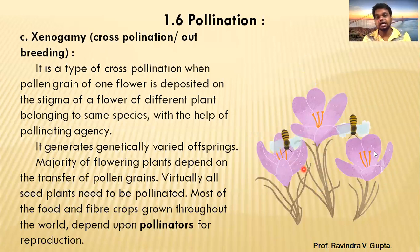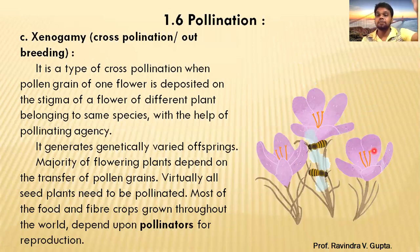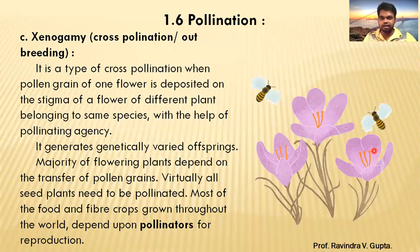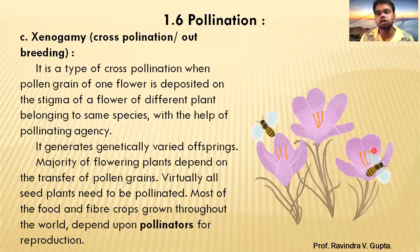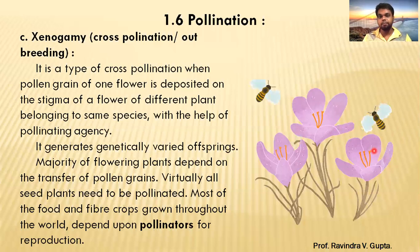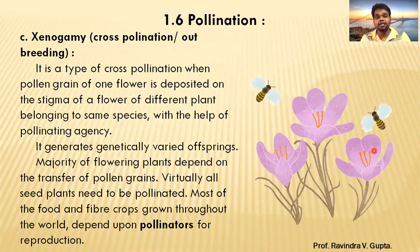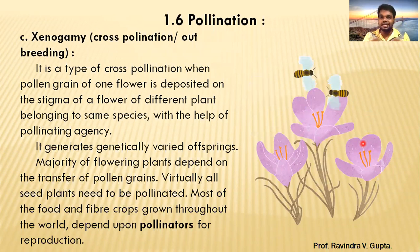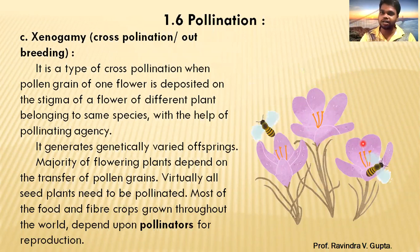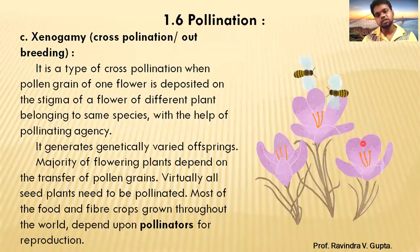The pollen grain of one plant is transferred to a different plant. This type of pollination is called cross-pollination, xenogamy, or outbreeding. For this type of cross-pollination a pollinating agent is required, because the plants may be far apart. You can see that the pollinating agent here is a honeybee — when it sits on a flower, pollen grains stick to its legs, and when it moves to the next flower those pollen grains are deposited on the stigma.